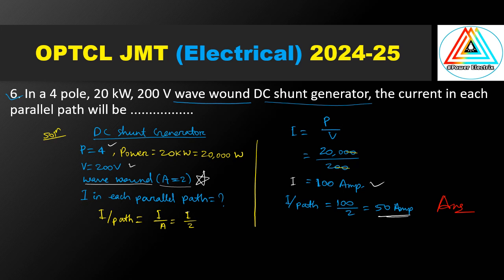To summarize: first write the given data, find the total number of parallel paths, calculate total current, then divide total current by number of parallel paths to get the current per path. That gives 50 ampere. Clear.